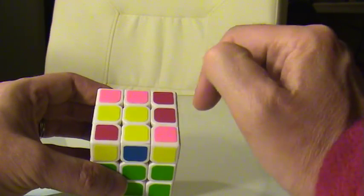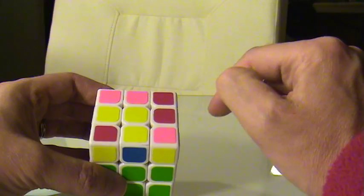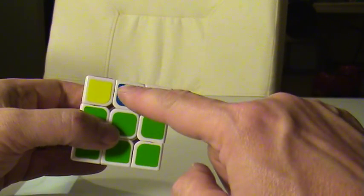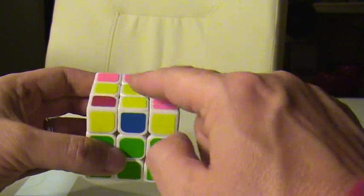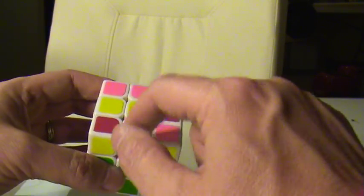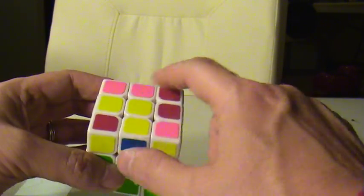For this edge piece, what I want to do is create the cross. I'm not concerned about whether these edges are correct or not. I just simply want all the yellow sides to be facing up. In this case I have two of the yellow sides facing up. I want these other two to be facing up.